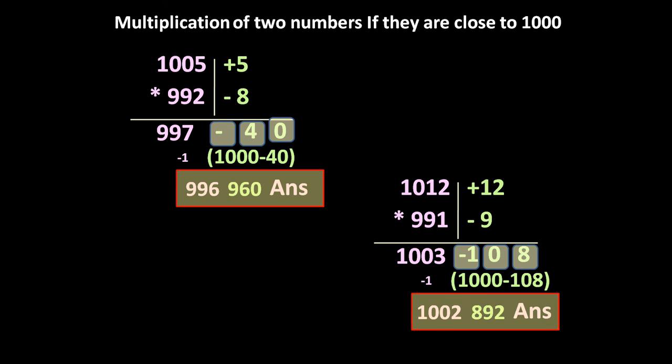In this manner you can do the multiplication of any two numbers if they are close to 1000. It takes very less time to do such multiplication. Thank you very much for watching this video. If you like it, please subscribe to my channel.